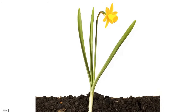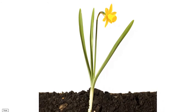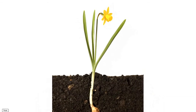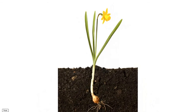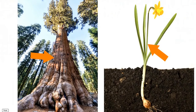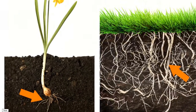Plants are living things and have different parts. These parts can help plants get what they need to live and grow. Leaves help plants catch sunlight, which they use to make food. Stems help plants stand up — some plants have really big stems, others are small. Roots keep the plant in the ground and also collect water.